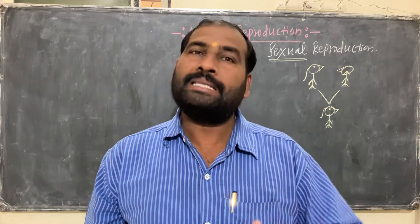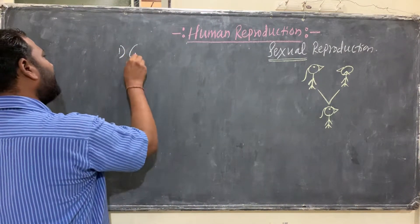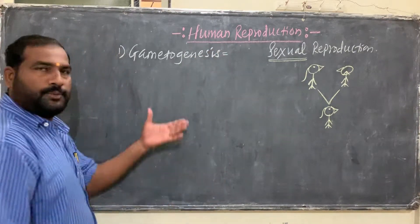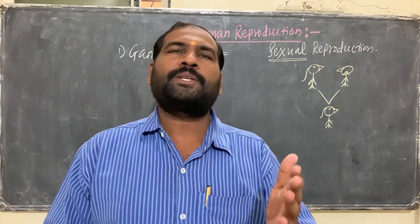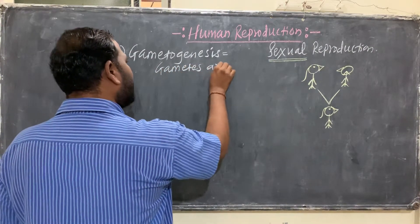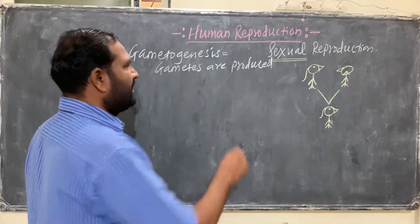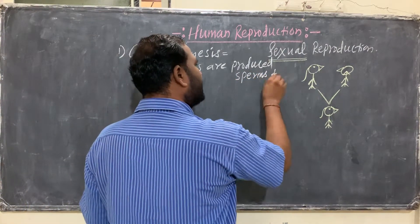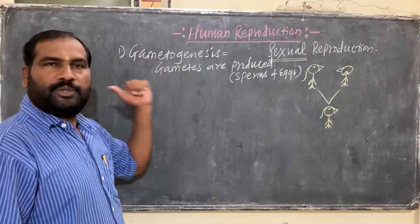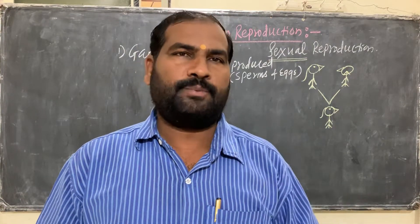The sequential steps in sexual reproduction of human beings are: first, gametogenesis. Gametogenesis means the formation of gametes. During gametogenesis, both male and female gametes are produced. Male gametes and female gametes are produced in this process.